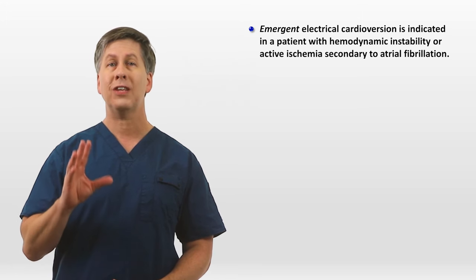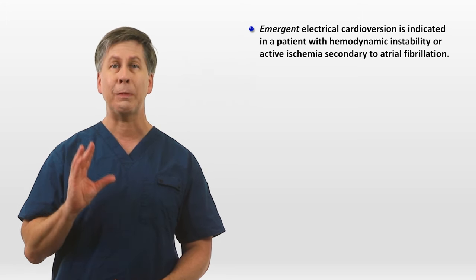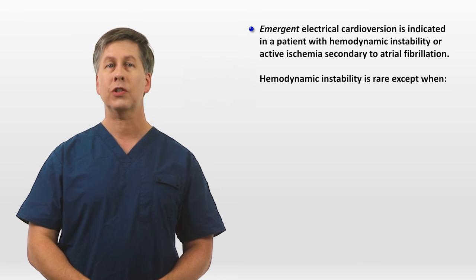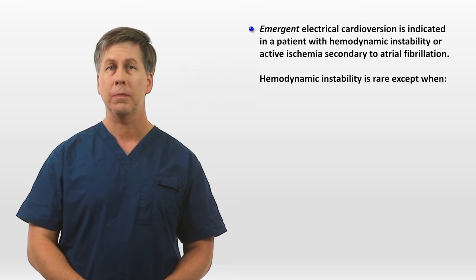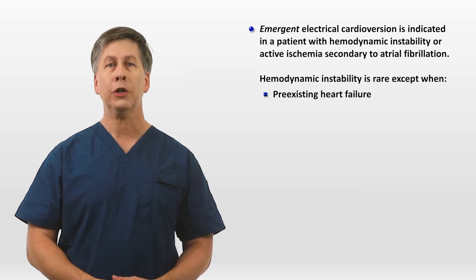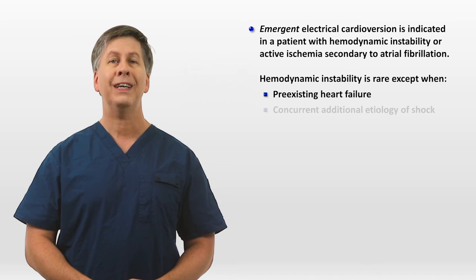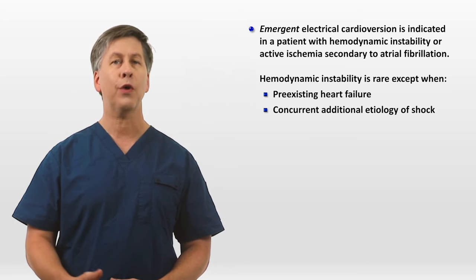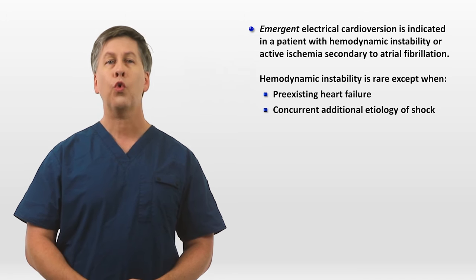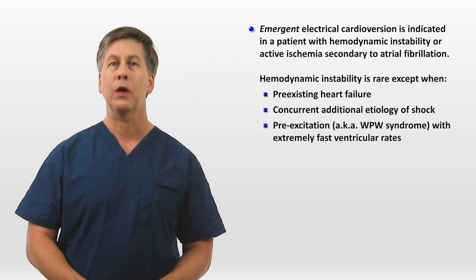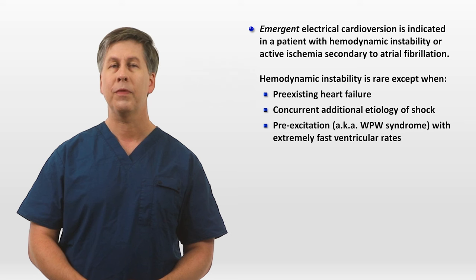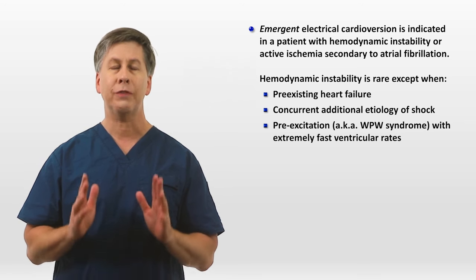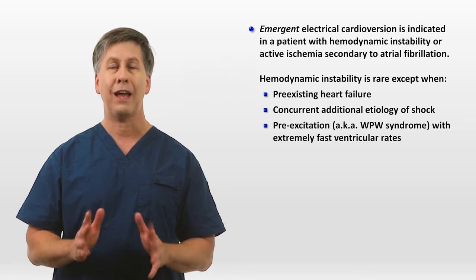A word about hemodynamic instability in AFib: this is generally rare, and its presence suggests one of three explanations. The patient has pre-existing heart failure; there is a concurrent additional etiology of shock, such as an acute MI or volume depletion; or the patient has pre-excitation, also known as Wolff-Parkinson-White syndrome, a consequence of which is extremely fast ventricular rates when in AFib.